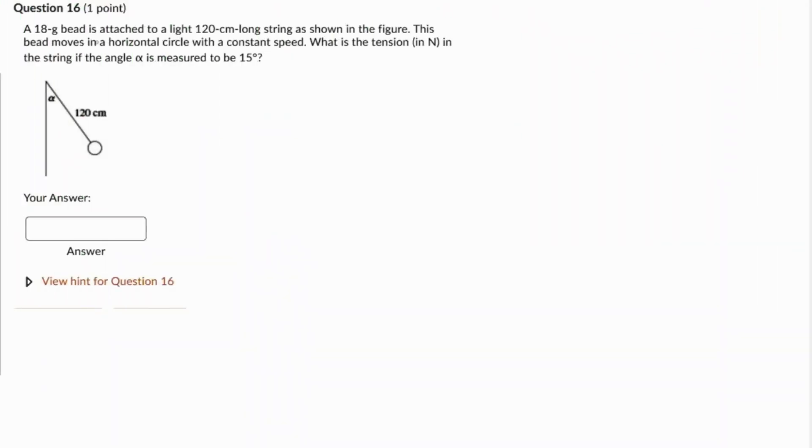This question: an 18 gram bead is connected to a light 120 centimeter long string as shown in the figure. This bead moves in a horizontal circle, remember horizontal circle not a vertical circle, with a constant speed.